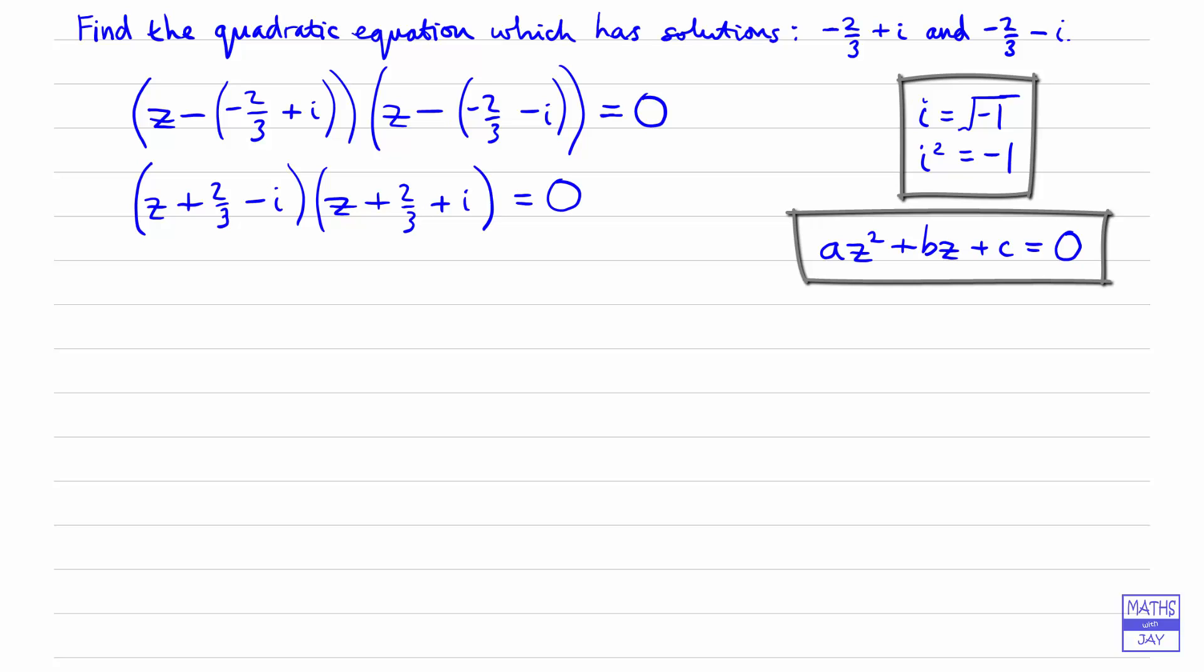So now what we can do is we can see that the first part of the bracket, the z plus two-thirds, appears in both of them, doesn't it? So I've highlighted that because then we can see what we can use next is the idea of the difference of two squares.